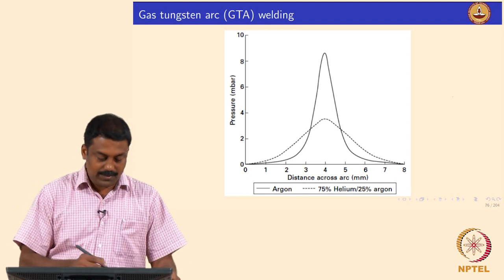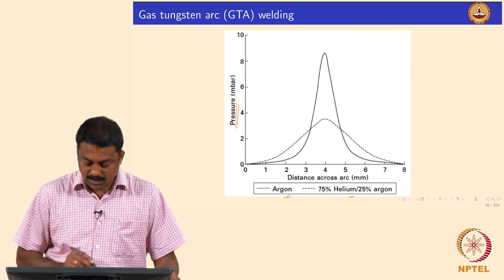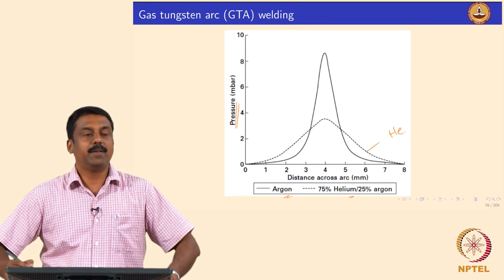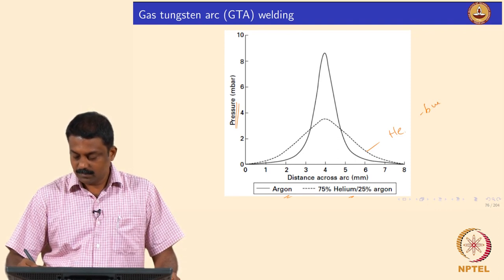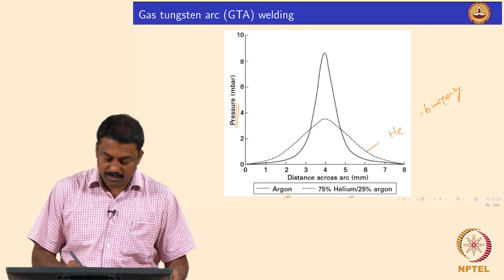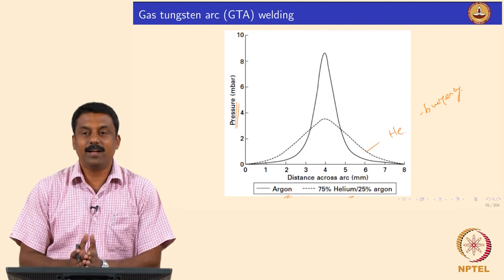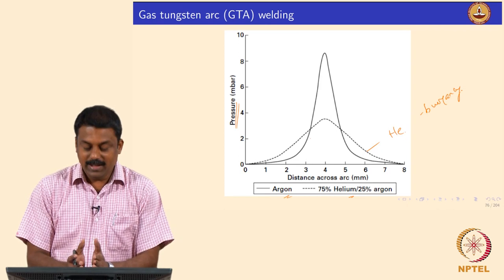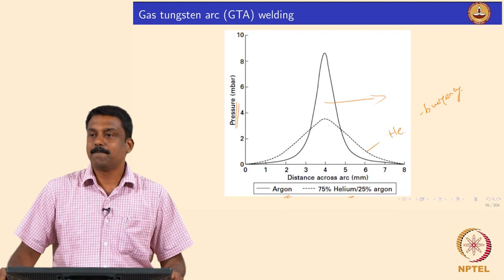This is a classical example of arc pressure measured over the diameter of the arc using argon and helium-argon mixtures — you can see the difference already. Helium is a highly convective gas; heat transfer is very effective by convection due to buoyancy. When you use only argon, an enormous amount of heat concentrates at the arc core. Argon is a monoatomic gas — it does not dissociate — so heat is not transferred effectively from the centre of the arc to the circumference.